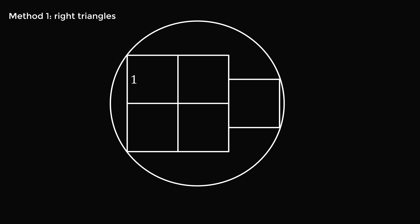There are many ways to solve this problem and I will present three methods. Method one: right triangles. Consider the square on the right side — this side is a chord of the circle. Now consider the two squares in the 2x2 grid on the left side — their two sides together will be a chord of the circle. The perpendicular bisector of the chord on the right will pass through the center of the circle, as will the perpendicular bisector of the chord on the left, which also passes through the center of the 2x2 grid. Combining these perpendicular bisectors, they form a diameter of the circle, and the center point is P.